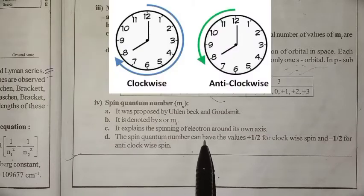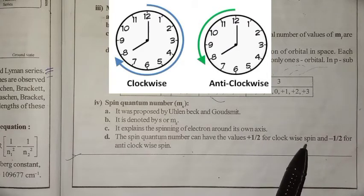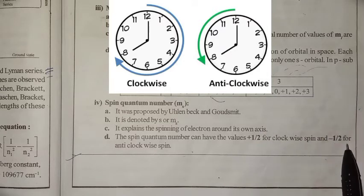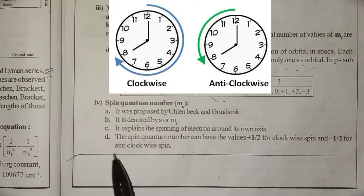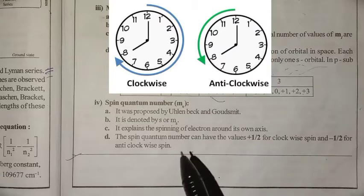The spin quantum number can have values of plus 1/2 or minus 1/2. Plus 1/2 is equal to clockwise spin. Minus 1/2 is equal to anti-clockwise spin.